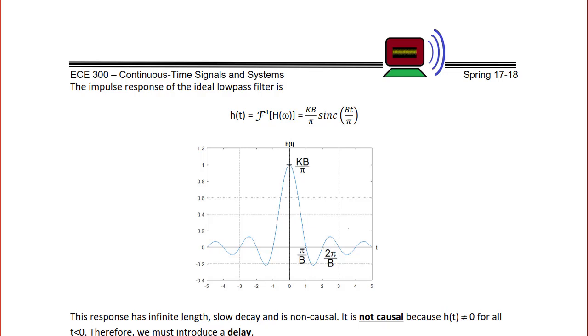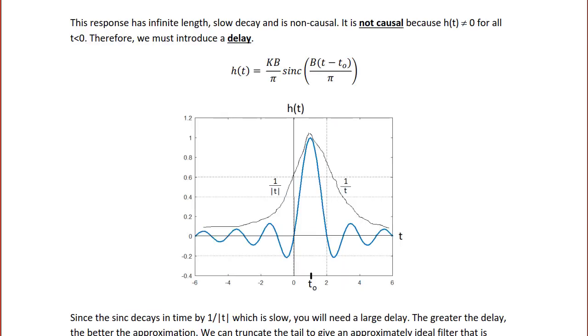If I find the inverse Fourier transform of K rect of omega over 2b, I will have Kb over pi sinc of Bt over pi. What this tells me is that in the time domain, this would look like a sinc function, where the magnitude is Kb over pi at zero, and the zero crossings are at pi over B, 2pi over B, etc. This response has infinite length in both directions because it's a sinc function. It has a slow decay, and it's non-causal. It's not causal because H of T is not equal to zero for T less than zero. Which means that in the real world, there would be no way in order to generate that sinc function, which means you couldn't get that ideal low-pass filter in the frequency domain.